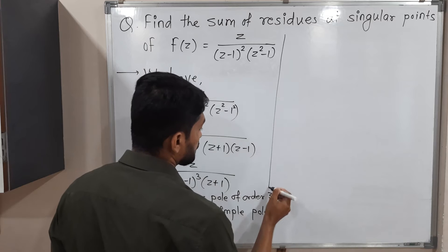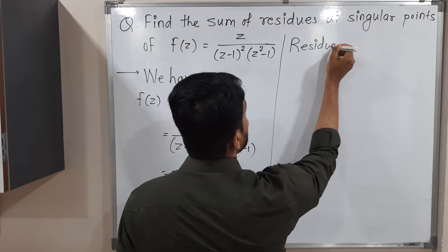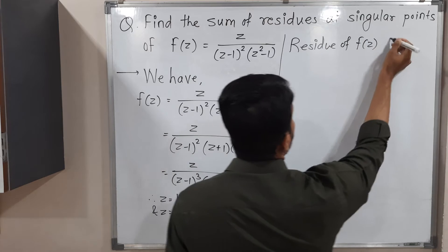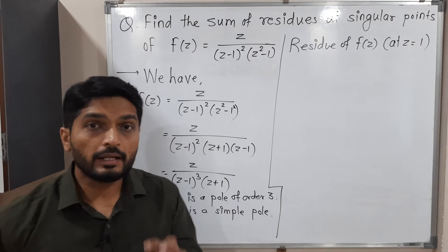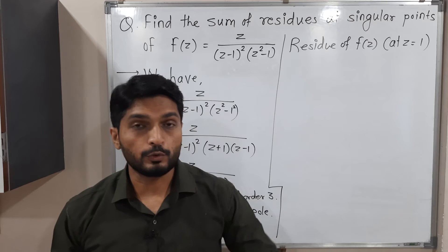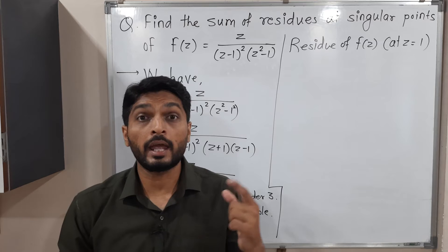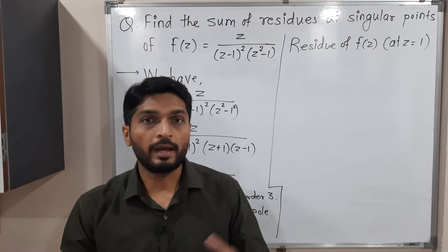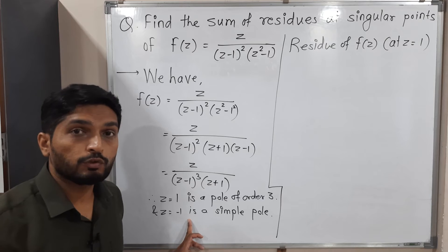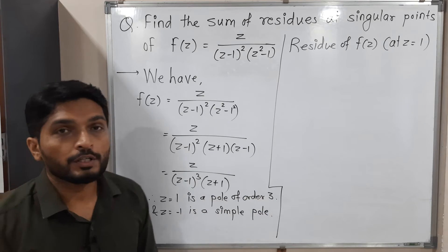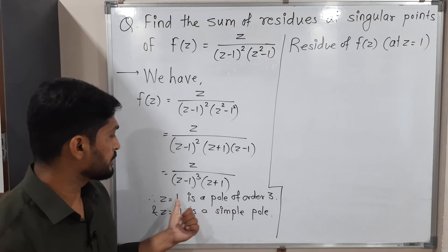There are two formulas to calculate residue. If you have a simple pole, the formula is different; if you have a pole of order n where n is greater than one, we have another formula. The second pole is a simple pole so I should use the simple pole formula for it, and z = 1 is a pole of order three so I should use the higher-order residue formula for that pole.